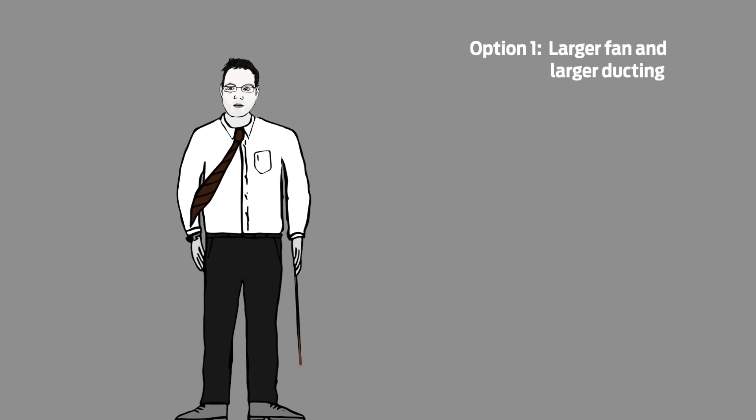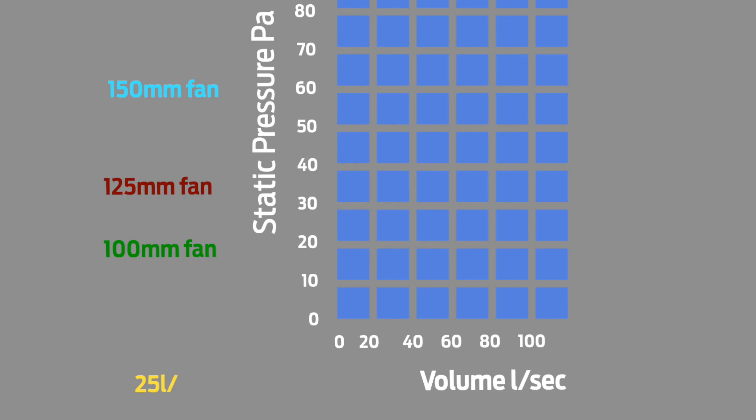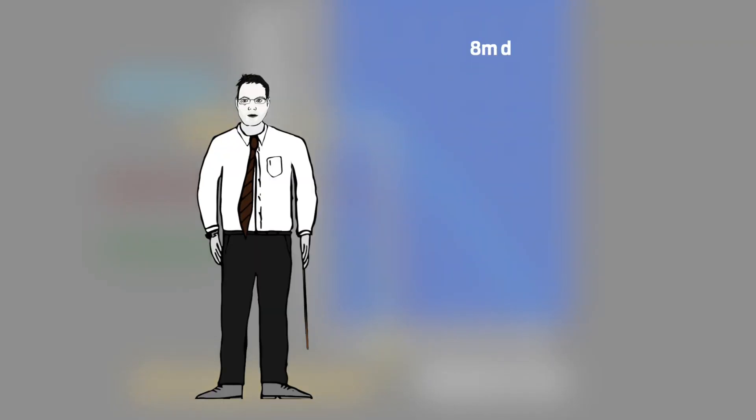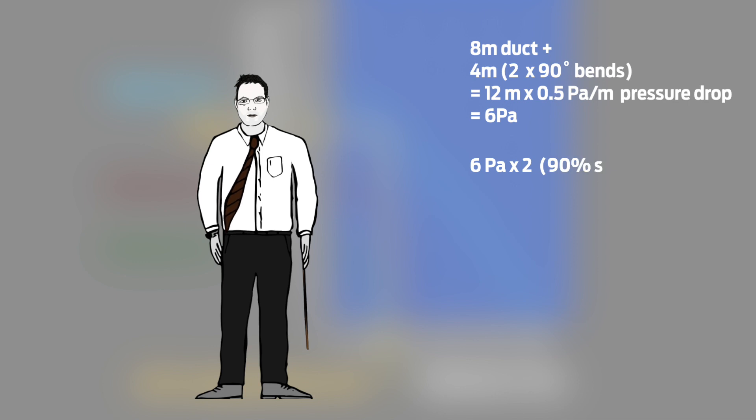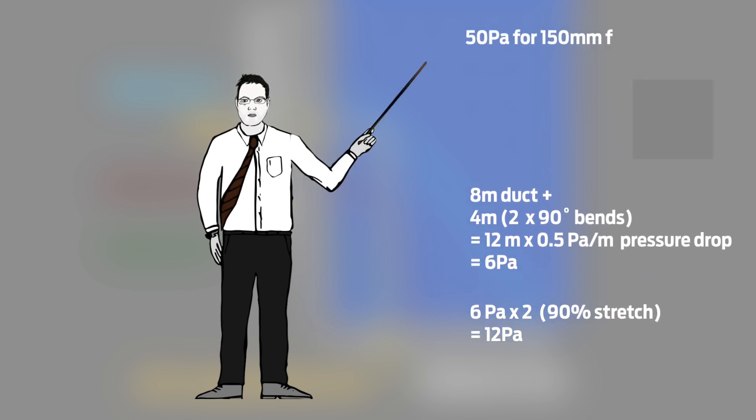Let's try the larger fan of 150 millimetres. At 25 litres per second, we can cope with around about a 50 Pa pressure drop. 8 metres of duct plus 4 metres for the bends gives us a pressure drop of 12 times 0.5, which is 6 Pa. If we double this for 90% stretch, it is only 12, so well within the 50 Pa the fan can overcome.